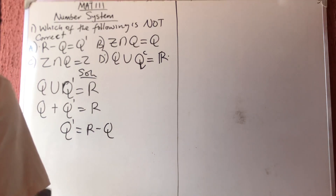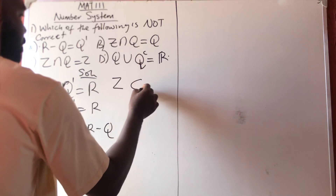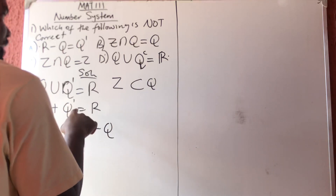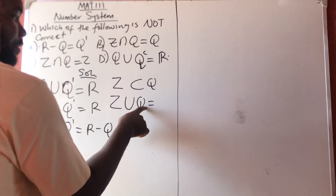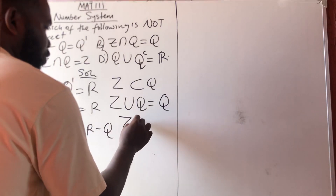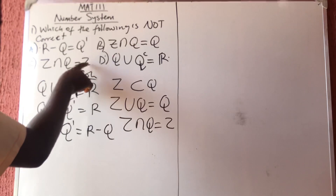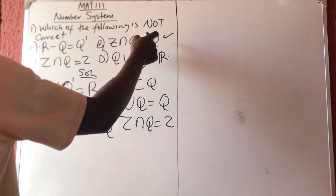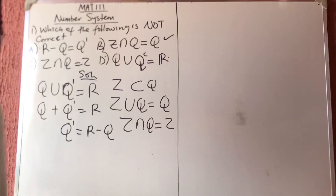For the remaining two: Z is a subset of Q, meaning Z is found inside Q. The union of a small set and a big set is the bigger one. But the intersection of a small set and a big set is the smaller one. They said Z intersection Q equals Z — that is correct. But option B says Z intersection Q equals Q, which is wrong. So the answer is B — option B is not correct.